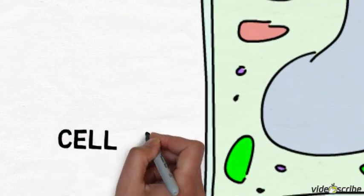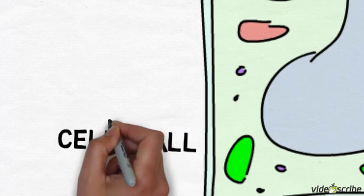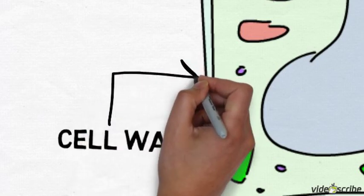The cell wall is made out of cellulose and provides structure to the plant cell. All the cell walls together provide a similar function as the skeleton does in our body.